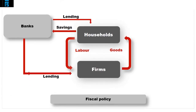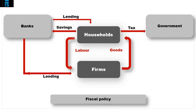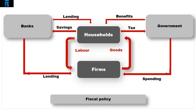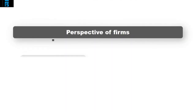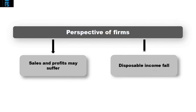Fiscal policy: an alternative approach that governments may adopt in an attempt to reduce consumer spending is to increase taxes such that households have less disposable income. The money generated by the government can then be used to redistribute wealth by providing benefits to households, or stimulate sectors of the economy through government spending. For example, if the government decides to build a hospital, not only is this a worthwhile project in its own right, but it will also create jobs in the construction industry. From the perspective of firms, their sales and profits are likely to suffer as disposable incomes fall, and this will hit hardest at firms who provide luxury products.